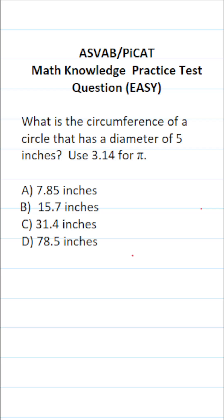So again, on the ASVAB and PiCAT, you're not given a reference sheet. So you have to be able to calculate things such as finding the circumference and area of circles from memory.